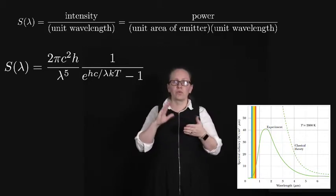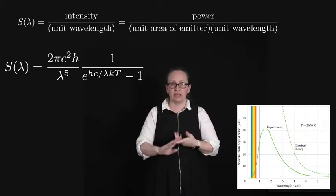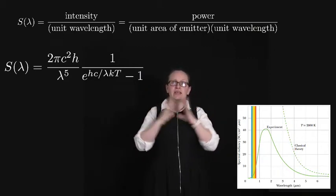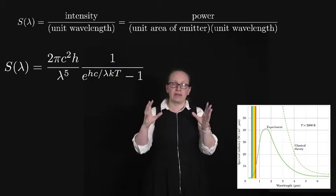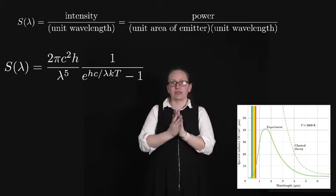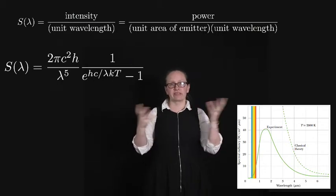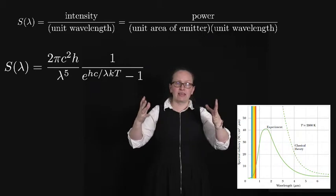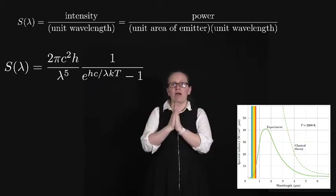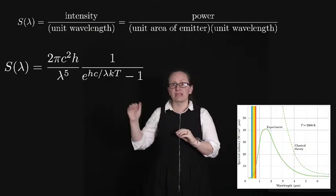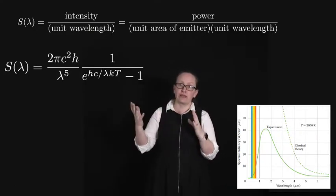We now have both theoretical and experimental evidence in agreement using Planck's form for the spectral radiance function. But we can actually do some things to this function to find out some other useful quantities. One thing that we can do is work out at what wavelength are we going to have the maximum intensity or spectral radiance.